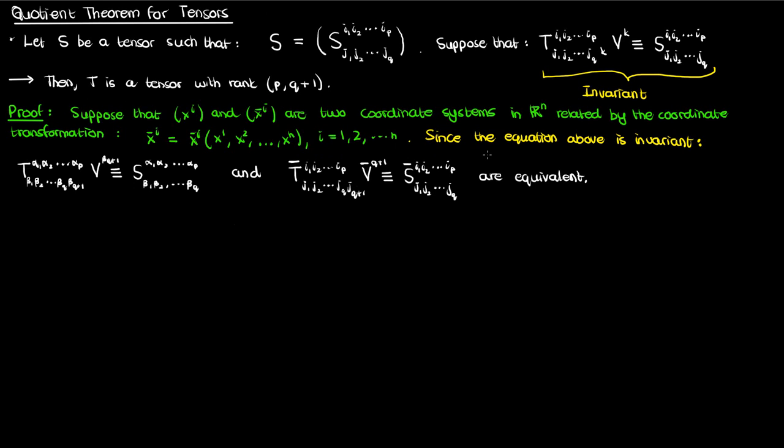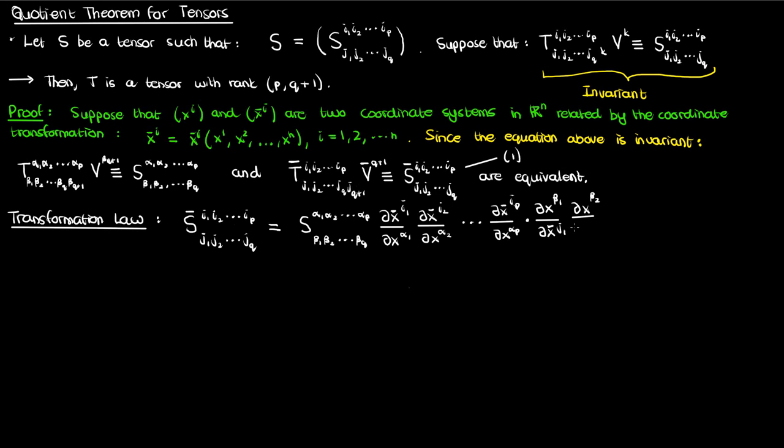Let's now carry on with the barred equation, which I'll label equation 1. We can now write out the transformation laws converting from the unbarred coordinate system to the barred coordinate system for S, which is going to be this long equation with a whole bunch of partial derivatives in it.